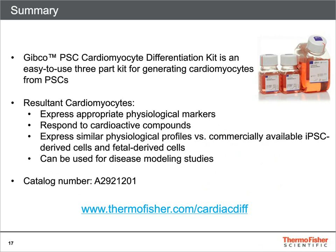In summary, the PSC Cardiomyocyte Differentiation Kit is an easy-to-use three-part kit for generating cardiomyocytes from PSCs. Resultant cardiomyocytes express appropriate physiological markers, respond to cardioactive compounds, express similar physiological profiles versus commercially available iPSC-derived cells and fetal-derived cells, and can be used for disease modeling studies. The catalog number for the kit is A2921201 and can be ordered on thermofisher.com. More information can be found at www.thermofisher.com/cardiacdiff.